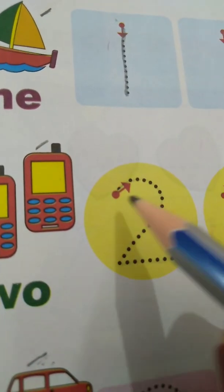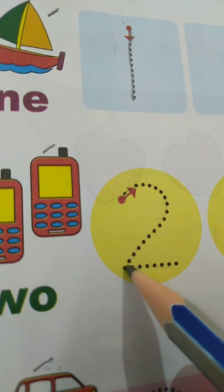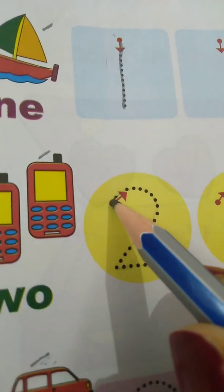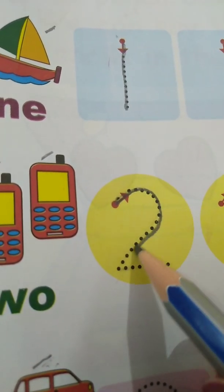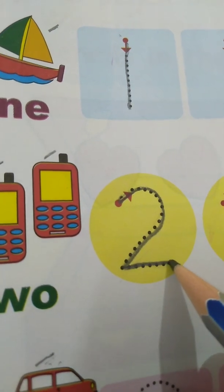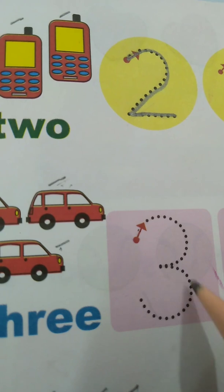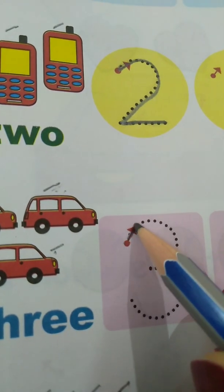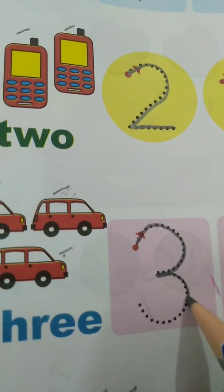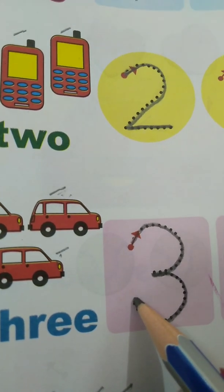Number 2. Number 2 is a curve and a sleeping line. This is number 1, this is number 2. Number 3 is 2 curves. This is number 3.